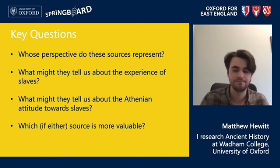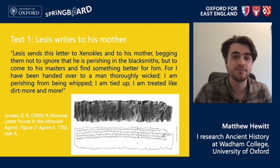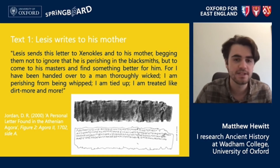The first text is a lead letter found in Athens in which an individual named Lysis writes to his mother asking for help after being beaten while working in a foundry. The text reads: 'Lysis sends this letter to Xenocles and to his mother, begging them not to ignore that he is perishing in the blacksmith's, but to come to his masters and find something better for him. For I have been handed over to a man thoroughly wicked; I am perishing from being whipped; I am tied up; I am treated like dirt more and more.'